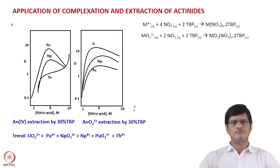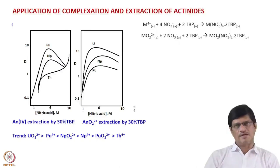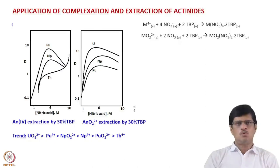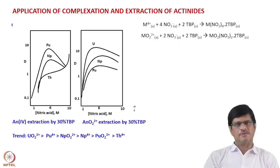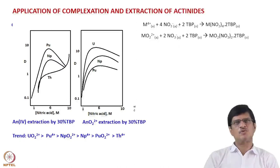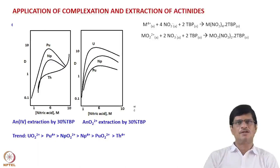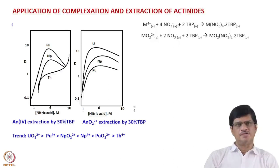This covers the extraction of tetravalent as well as hexavalent actinide ions. Hexavalent means the ionic species ANO2²⁺, where AN stands for the actinide element — for example the uranyl ion UO2²⁺, and similarly for neptunium and plutonium. The profiles shown in this slide are the comparative extraction of +4 and +6 actinides by 30% TBP dissolved in an aliphatic diluent like kerosene or dodecane.